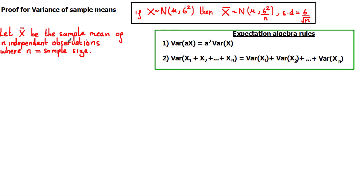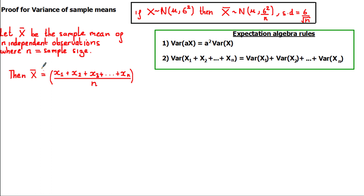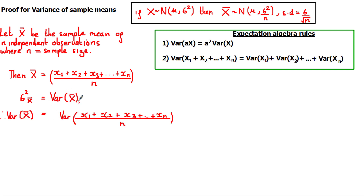Sampling with replacement allows us to assume the observations are independent. As before, x bar equals the sum of n independent observations divided by n. We define the variance of x bar, sigma squared sub x bar, as the variance of that expression. Using property 1, we take 1 over n out of the expression — but we must square it — giving us 1 over n squared times the variance of the sum of n independent observations.